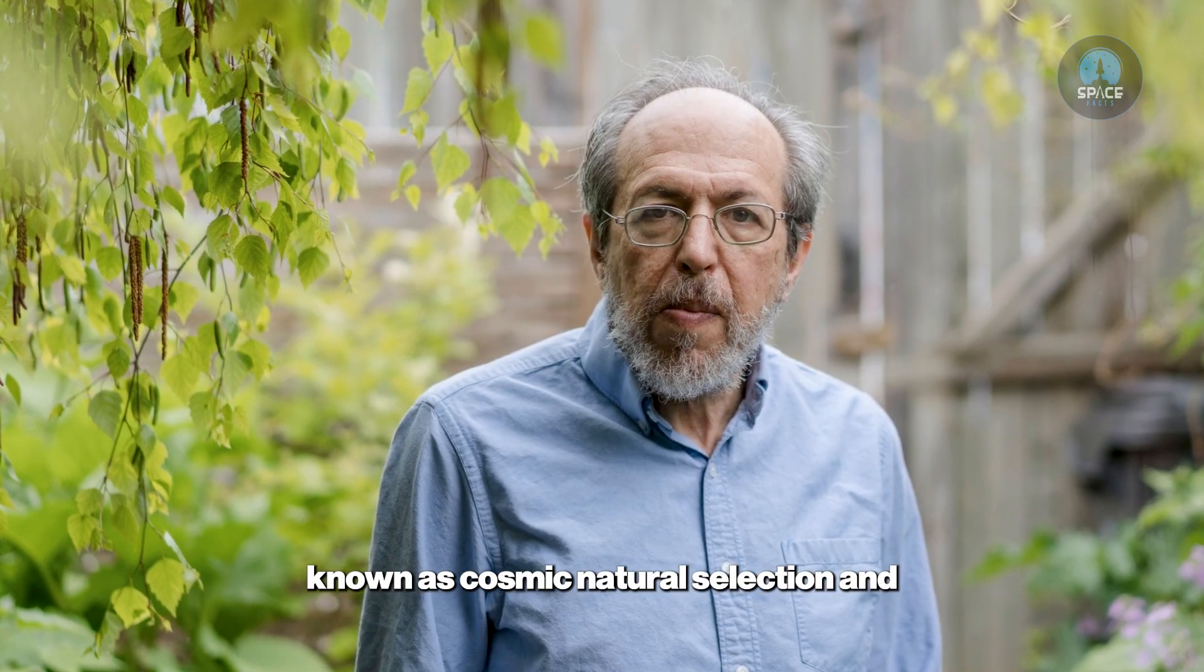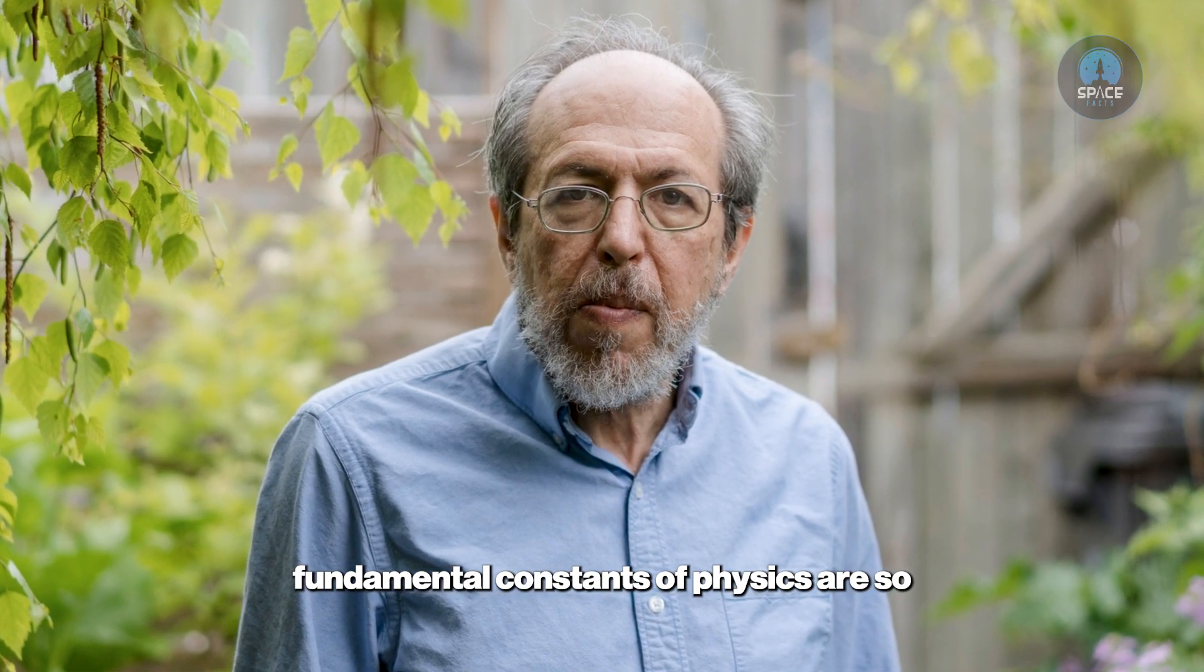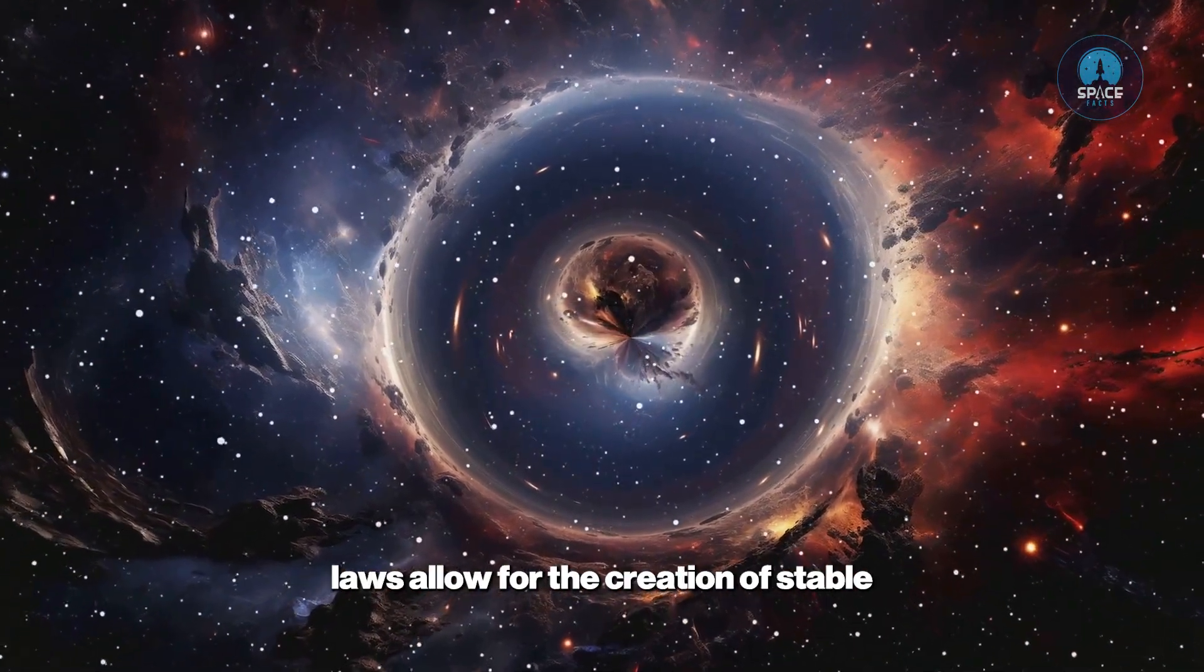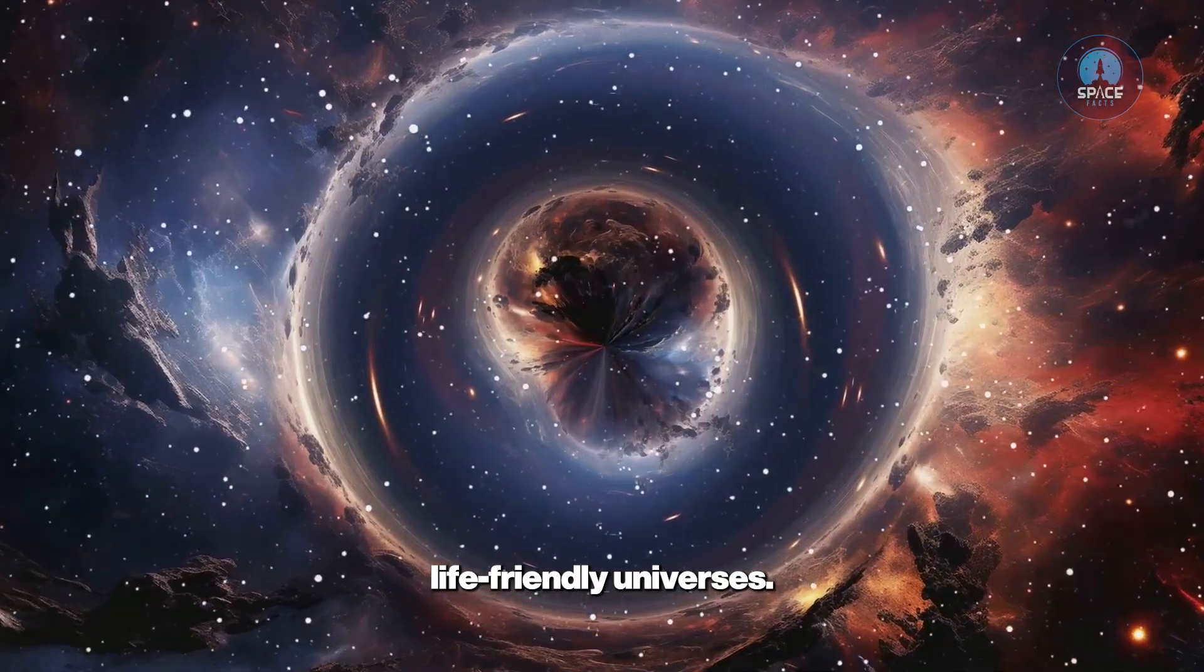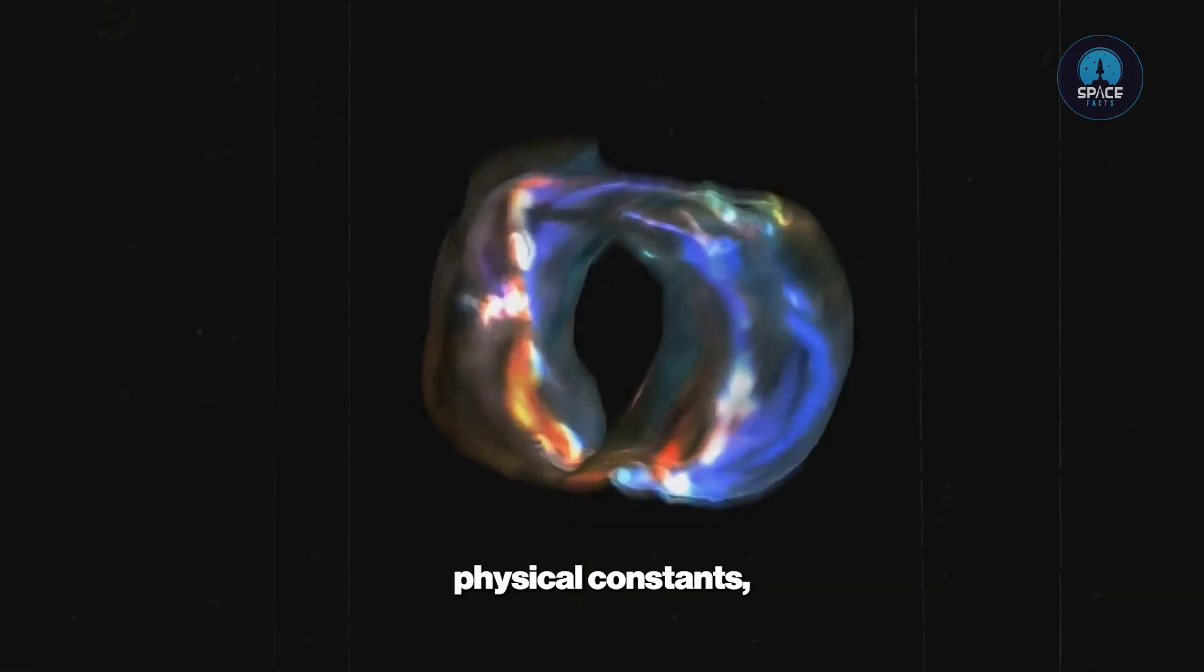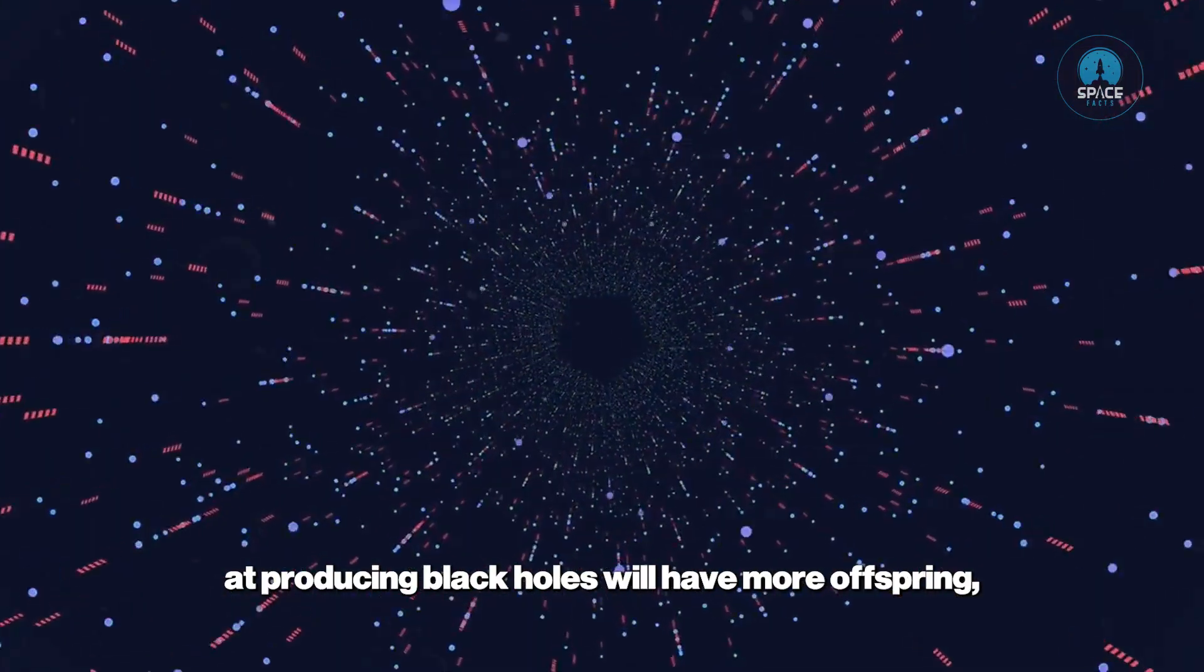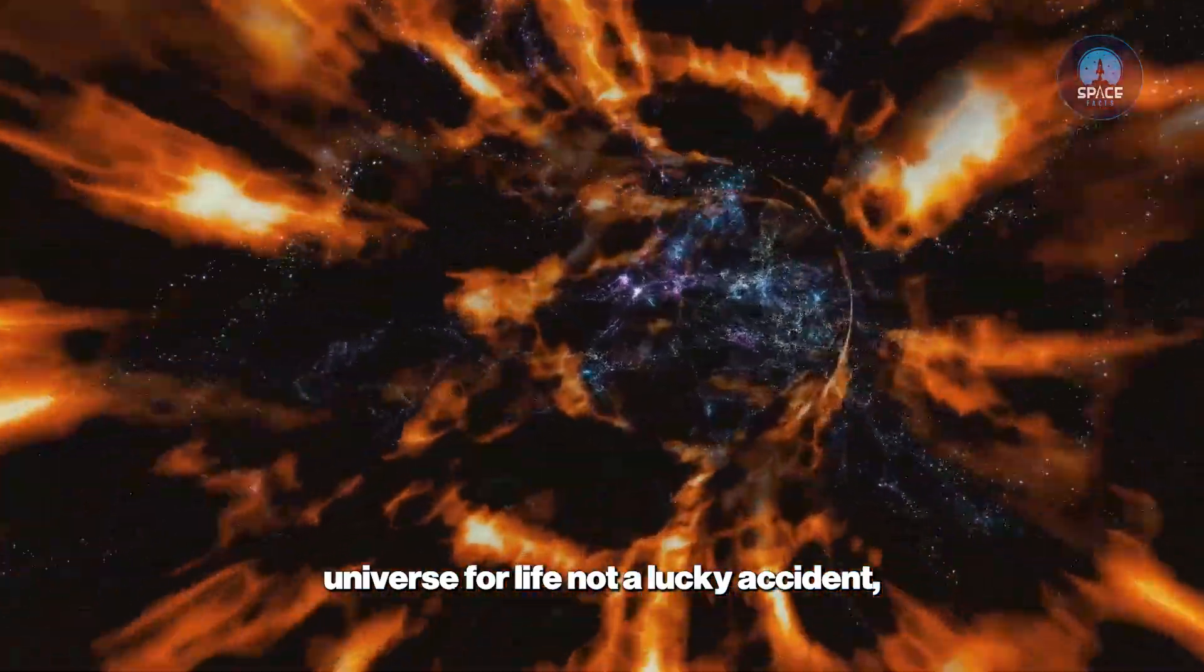This concept, known as cosmic natural selection and explored by physicist Lee Smolin, could even offer an explanation for the fine-tuning problem, the mystery of why the fundamental constants of physics are so perfectly set for life. If universes are constantly being created, then perhaps only those whose physical laws allow for the creation of stable black holes can themselves reproduce, leading to a multiverse dominated by life-friendly universes. This theory proposes that our universe is so adept at creating black holes precisely because it was born from one, continuing an unending cosmic lineage. Smolin's theory suggests that the physical constants, like the strength of gravity or the mass of an electron, could slightly mutate with each new universe born from a bounce. Universes with constants that are better at producing black holes will have more offspring, and over countless generations these properties will become dominant. This makes the fine-tuning of our universe for life not a lucky accident but a predictable outcome of cosmic evolution on an unimaginable scale.